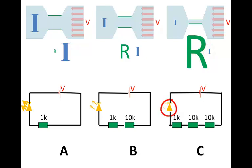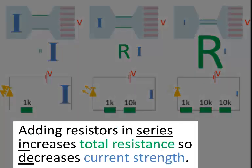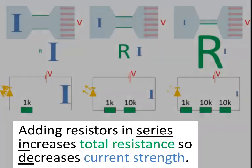That's why the LED is so dim. So from that investigation, we saw that adding resistors in series increases total resistance, and so it decreases current strength.